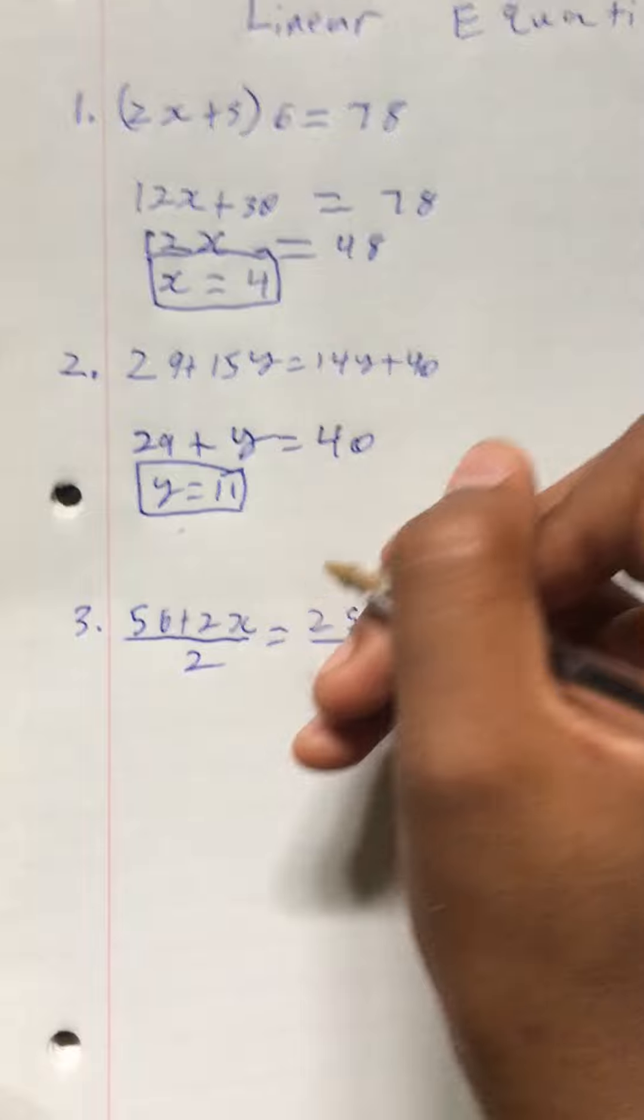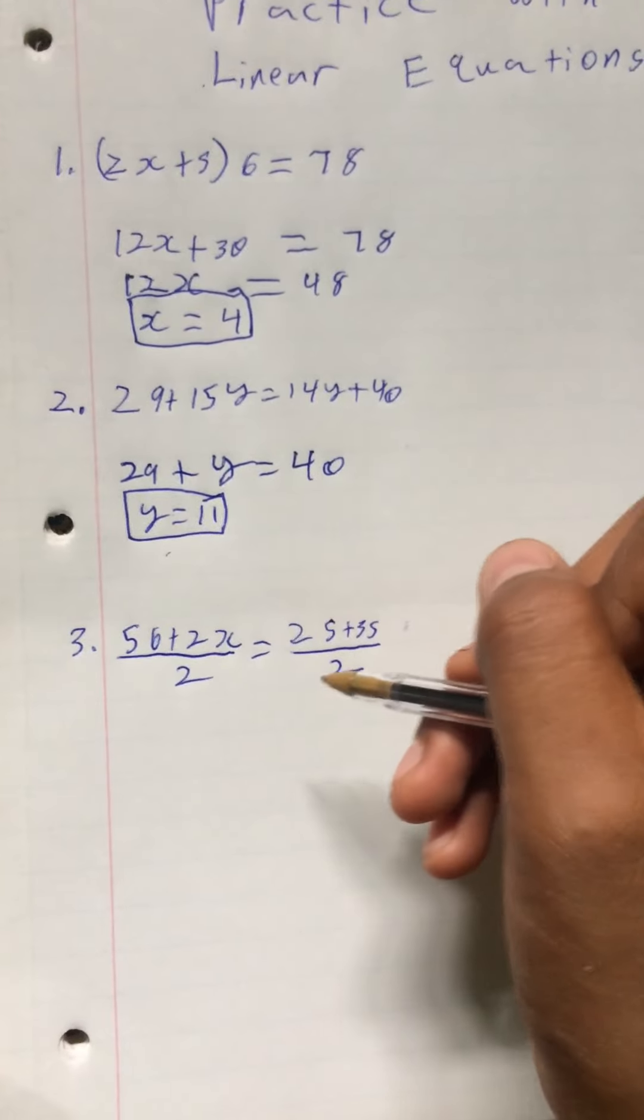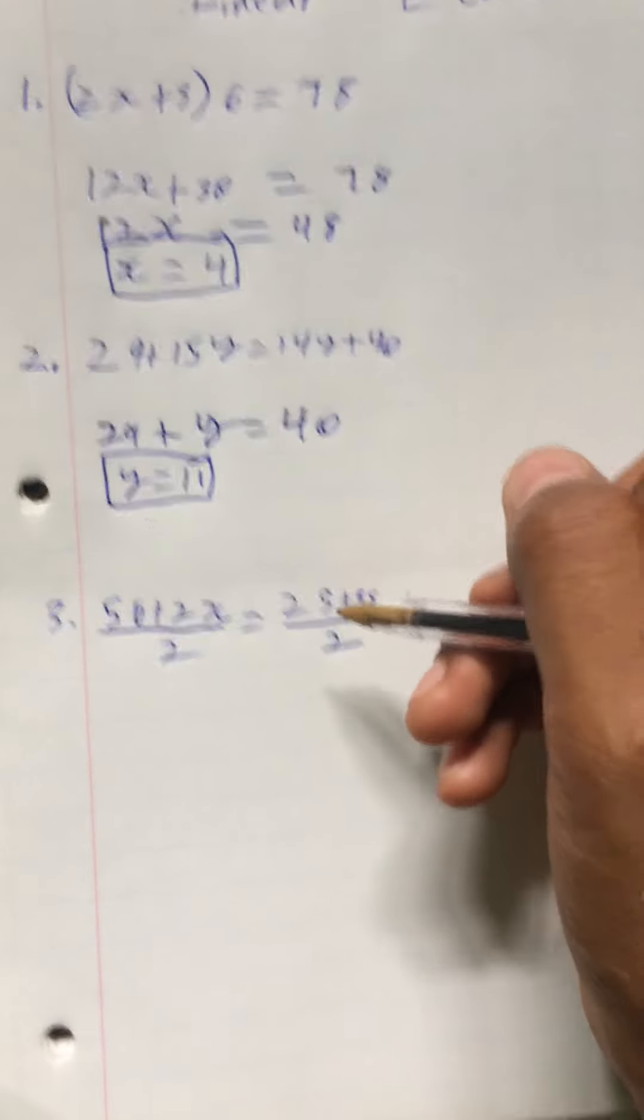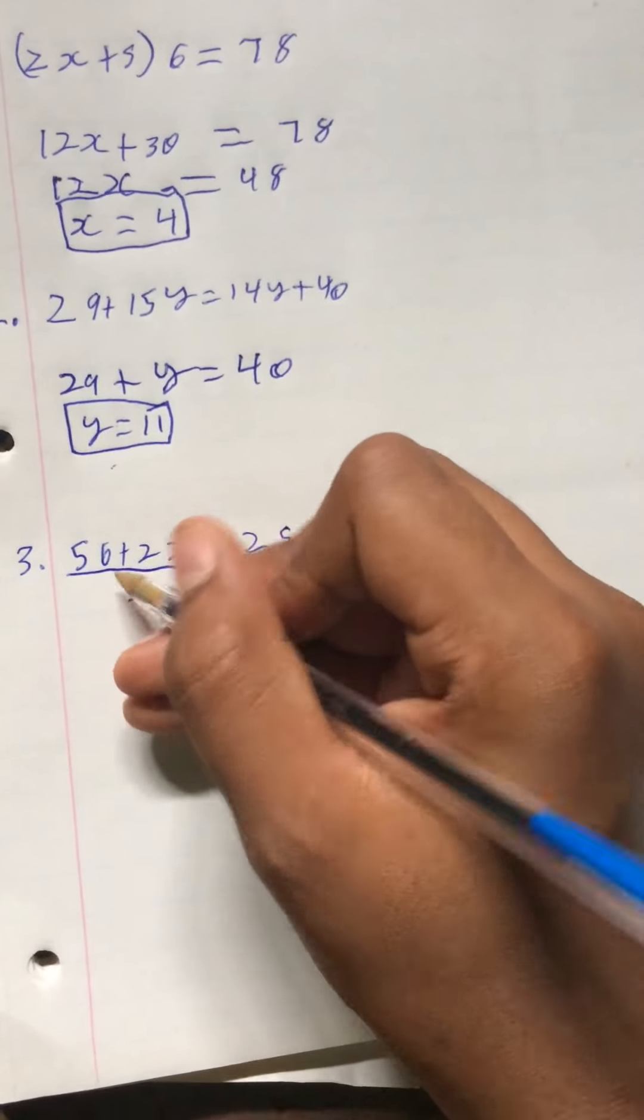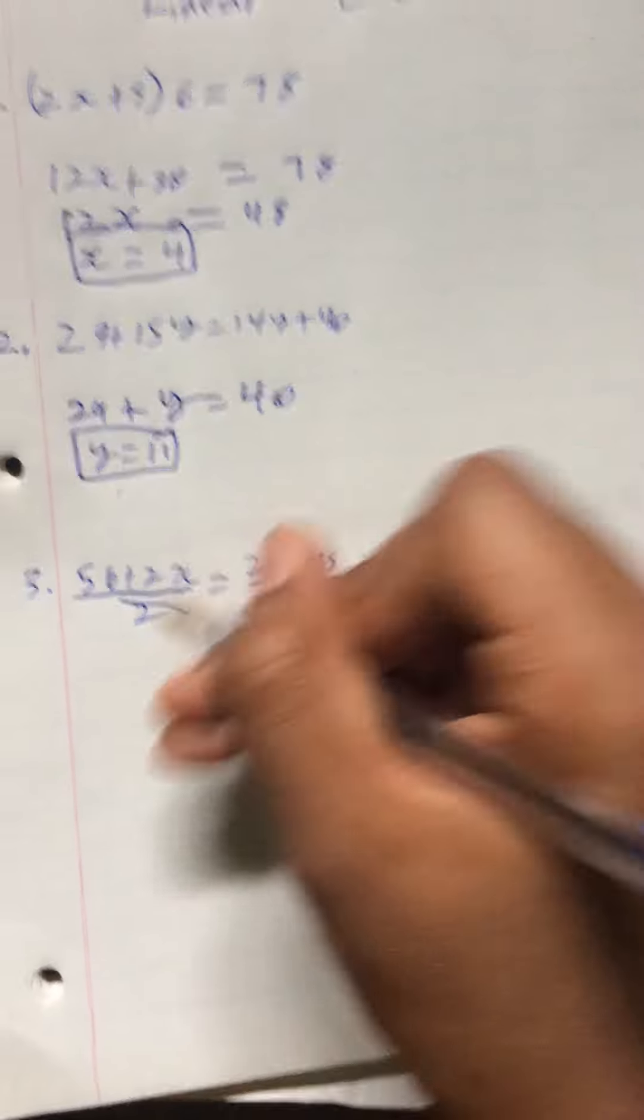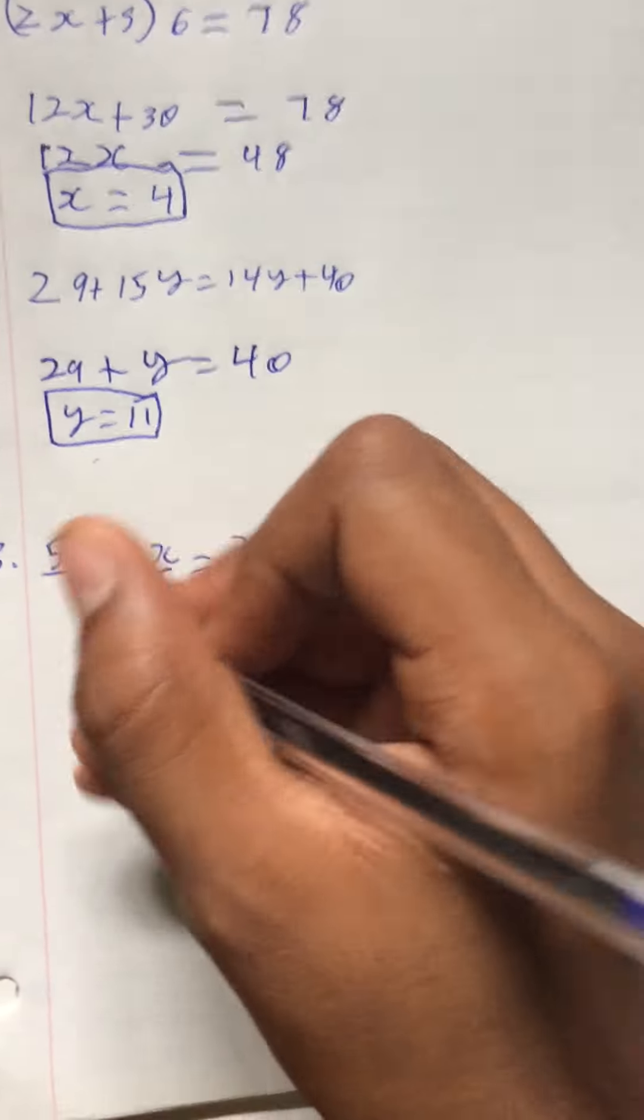Now for the third problem. 56 plus 2x over 2 equals 25 plus 35 over 2. What we can immediately do here is just cancel these since they're the same on both sides.